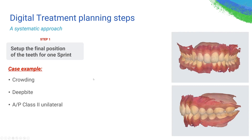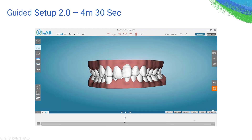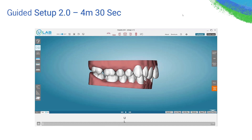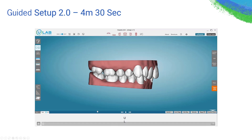Let's go through a case and break it down. When you try to create a setup, you pick up a case that has distalization, deep bite correction, and crowding. You can break these treatment objectives into a few different sprints. When you start, maybe target the distalization first. If you decided to use aligners as opposed to hybrid appliances, then start working on the deep bite — don't try to tackle everything at the same time, because the likelihood of your aligners not tracking is going to be more. Here's an example: in about four minutes and 30 seconds, you can create a setup.